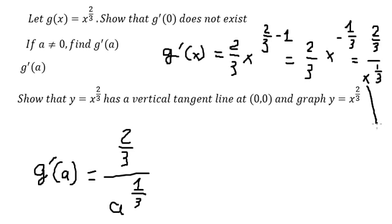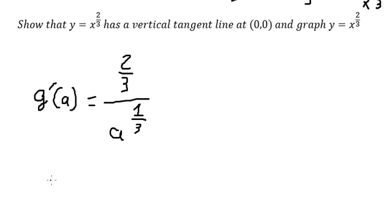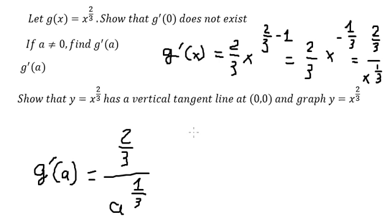That means in this situation, we cannot divide by zero. So that's why it does not exist, because if we divide by zero in here, the first derivative of the function will go to infinity.